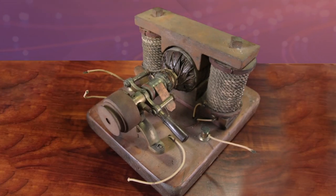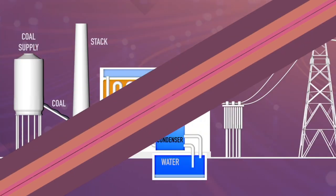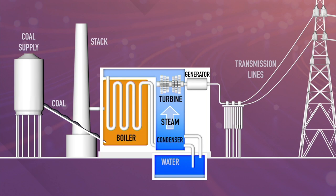This is a generator that was used in an early power plant at Niagara Falls. Many early generators used coal, and many still do. Coal is burned to heat water and create steam. That steam turns the turbine, which is connected to the shaft of the generator. The electricity generated is then conveyed over power lines to end users.